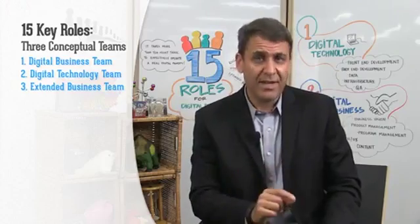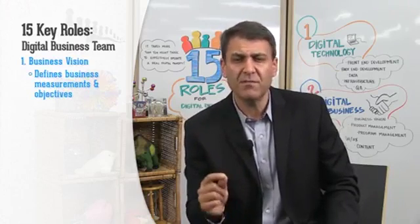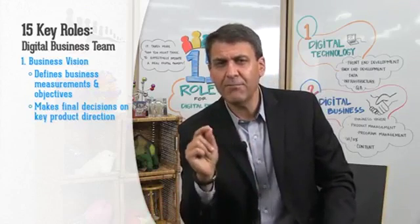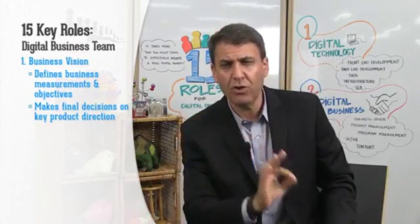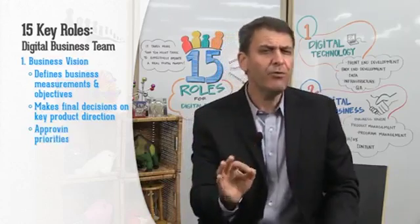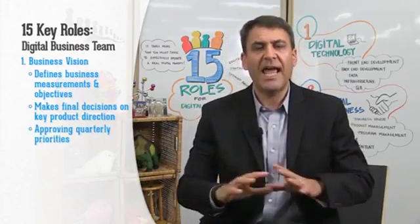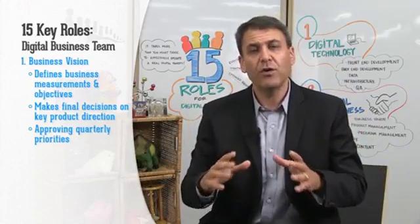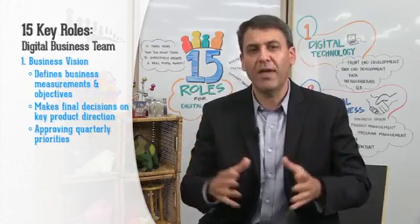Let's start reviewing the roles team by team. First, the digital business team. The first role is that of business vision. The owner of the business vision is responsible for defining the key business measures and objectives for that digital property — including what market segments are we going after and what objectives do we have for each of those segments. The digital visioneer should be making final decisions on key product direction, approving quarterly priorities that the team presents, and acting at that high level.